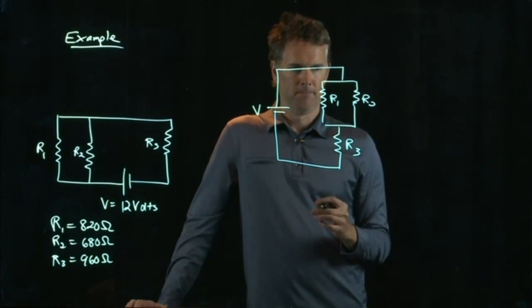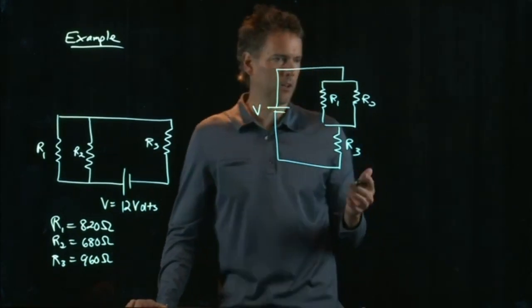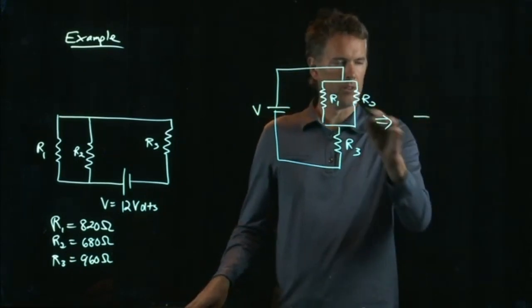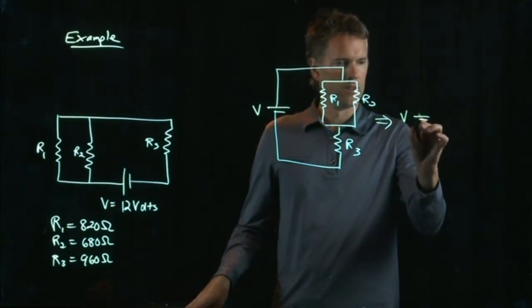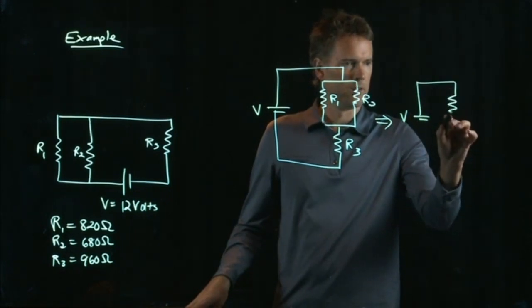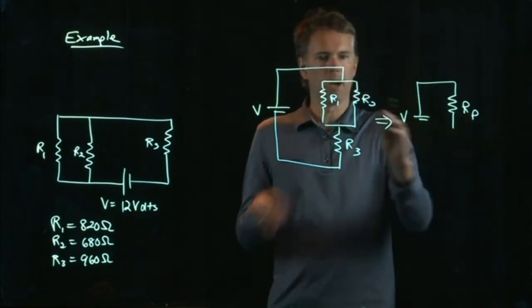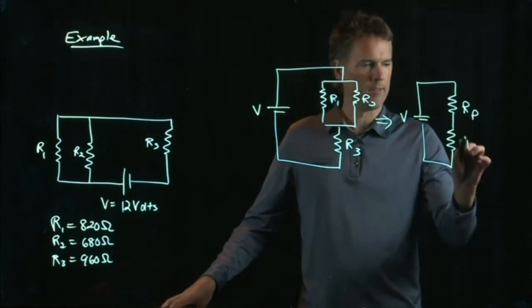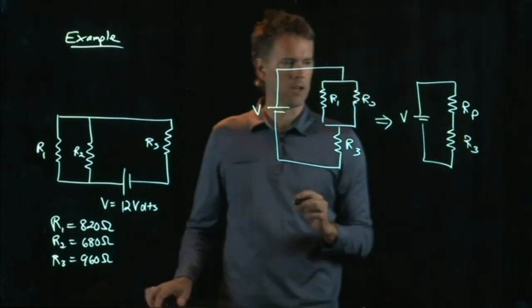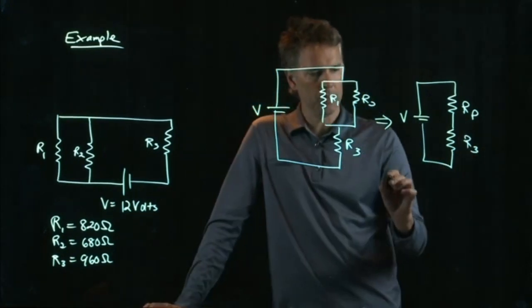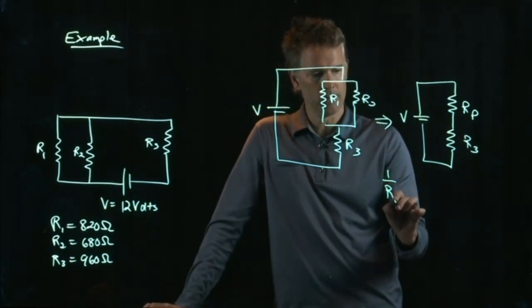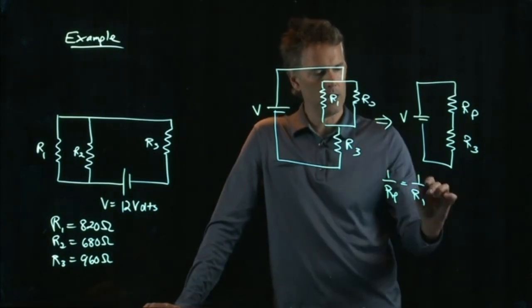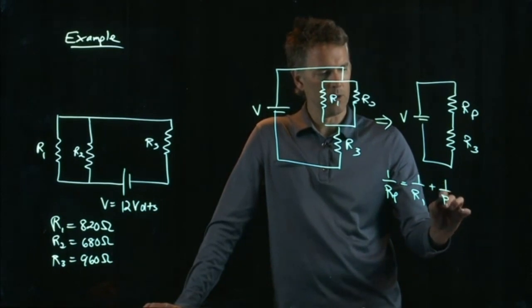All right, we know how to model this now. We just did this a second ago. First step is, let's get rid of this parallel. So, we rewrite the parallel resistors as Rp. We still have R3 hanging down there. And we know what Rp is. 1 over Rp equals 1 over R1 plus 1 over R2.